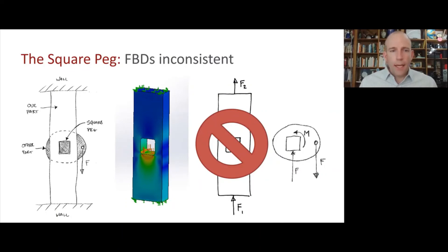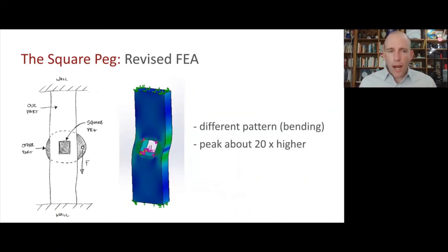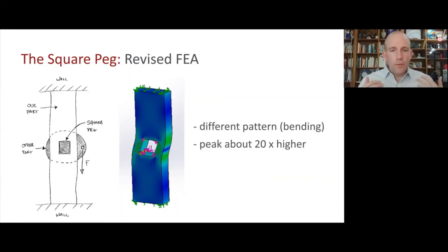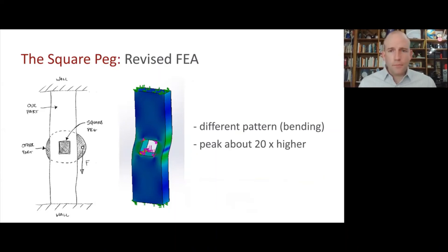This led us to load the component in finite element analysis incorrectly, giving erroneous stress results. Going back and modeling it more accurately, we see a pattern of deformation and stress quite different from before, and the peak stress has increased by about 20-fold. These little mistakes we make will really propagate through our computational models. In other words, we can't use finite element analysis correctly if our back-of-the-envelope analysis isn't really good.